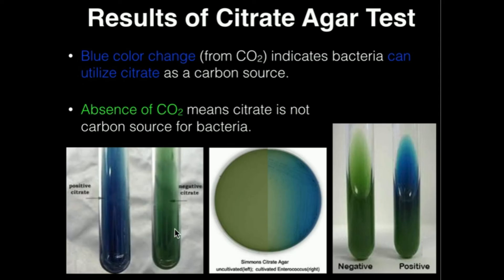Pretty much the only thing you have to do here is distinguish between blue and green. A blue result means citrate can be used as a carbon source. A green result means it cannot, and the bacteria won't even grow in the first place. Make sure to watch the demonstration video on the citrate agar test.